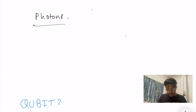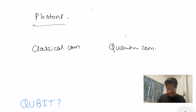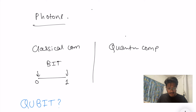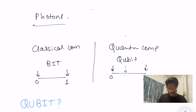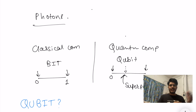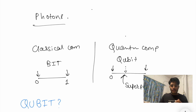A classical computer has a bit, which can be either 0 or 1. A quantum computer has a qubit, which can be 0, 1, or in between as well. This phenomenon is called superposition. We'll go in depth on this in later videos, but this is how you can correlate between the two.